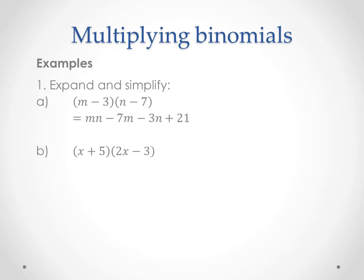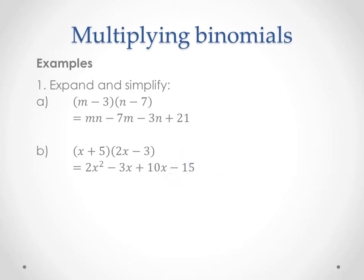Let's look at this second one. Step one: multiply everything in this binomial by everything in that binomial. We get x times 2x is 2x squared, x times negative 3 is negative 3x, 5 times 2x is 10x, and 5 times negative 3 — watch your signs — negative 15. In this case we can combine like terms. I'm seeing two x terms in the middle: negative 3x plus 10x is positive 7x, so that middle term becomes positive 7x. Everything else stays the same.